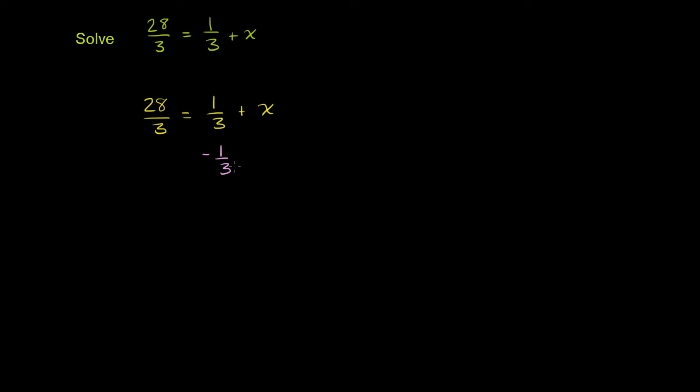But I can't just subtract it from the right-hand side; that would change the equality. If I subtract 1/3 from only one side, I have to do the other side as well to maintain the equality. If I did it from just one side, it wouldn't hold. So I'm going to subtract the same quantity from both sides so they're still equal.